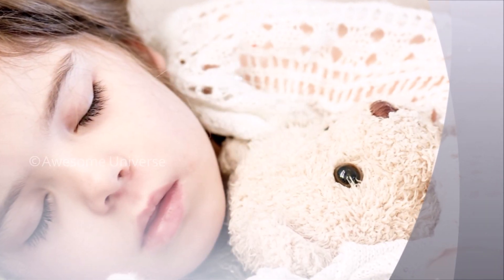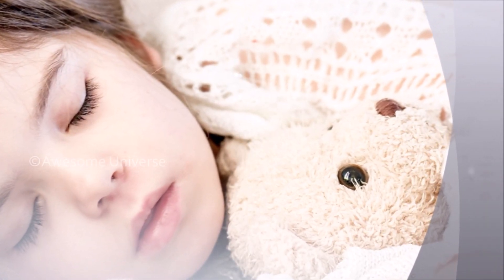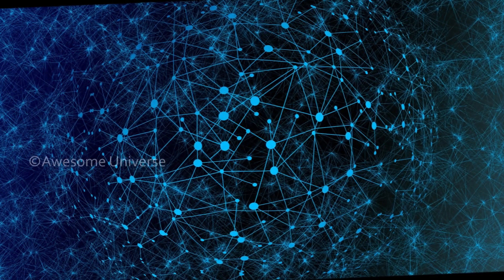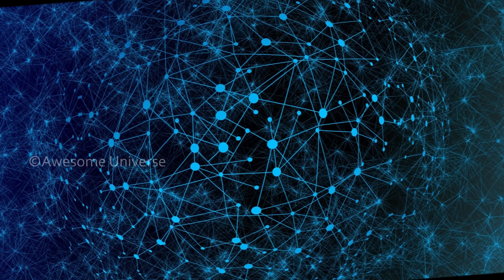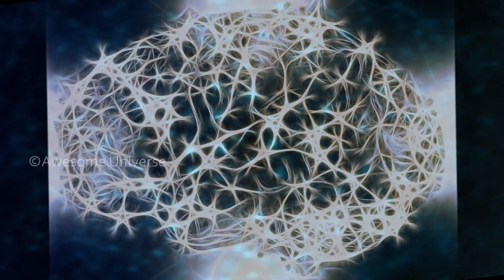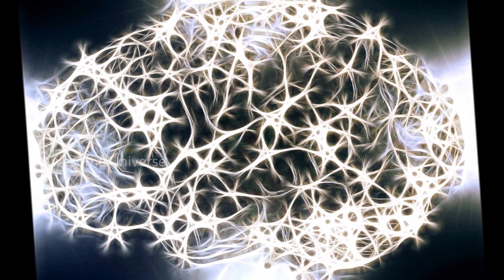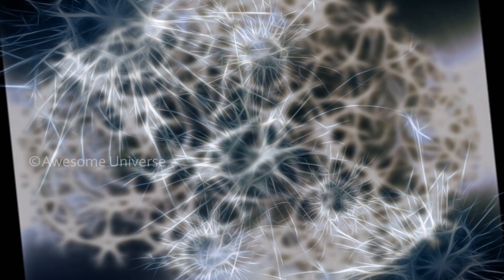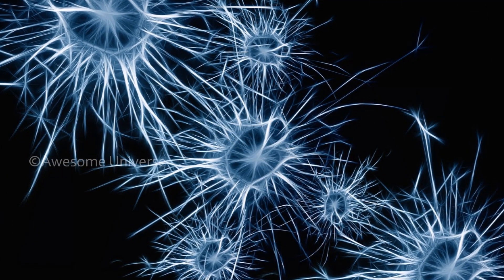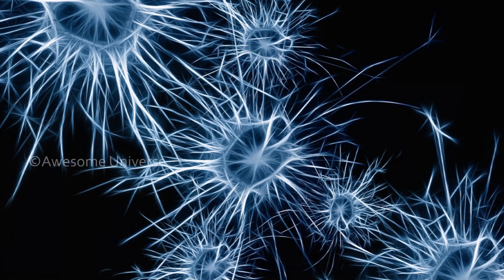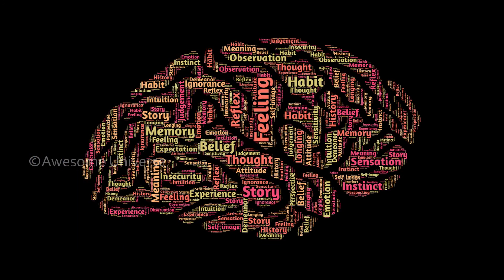How do you define a dream? A dream is a set of images, ideas, emotions, and sensations that usually occur involuntarily in the mind during certain stages of sleep. Dreams don't start reeling as soon as you sleep — you get dreams at a specific stage of sleep. What are these stages? We call them sleep stages.